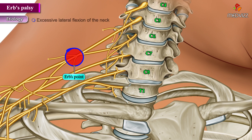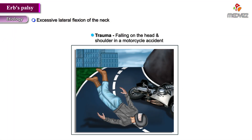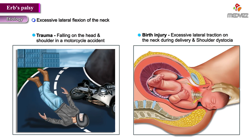Etiology: Excessive lateral flexion of the neck due to trauma, like falling on the head and shoulder in a motor vehicle accident, or during birth injury due to excessive lateral traction on the neck during delivery and shoulder dystocia, are responsible for Erb's Palsy.